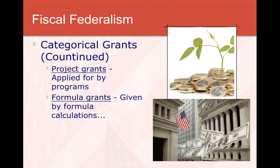Some categorical grants are distributed by formula. Data about the state and local governments is entered, and it determines whether you qualify. For example, if your state has a low literacy rate, it may get more education funding. If your state has a high poverty rate, it may receive grants to help people get jobs or earn higher wages.